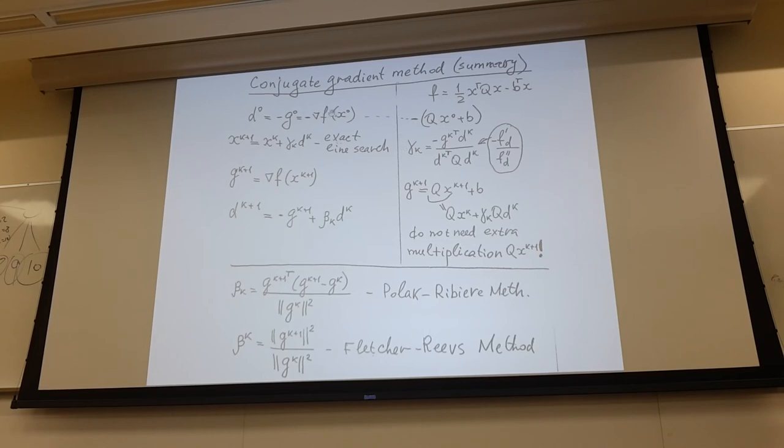So the final procedure is rather simple. We first go in the direction of minus gradient, do line search, compute new gradient, compute new direction by this formula, and then go back to the line search. We loop among those three lines.